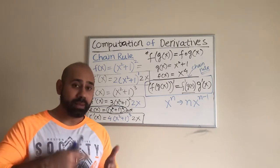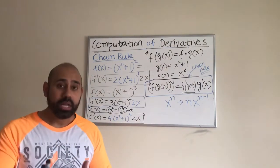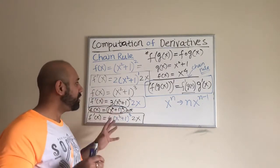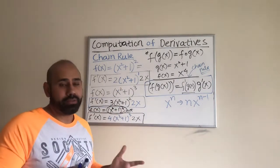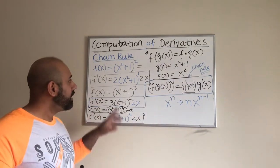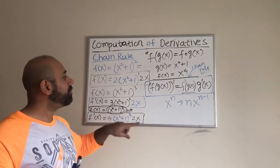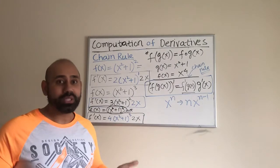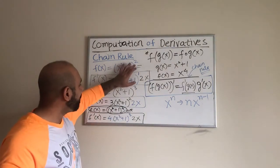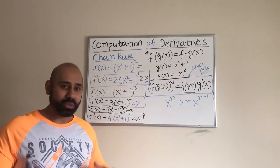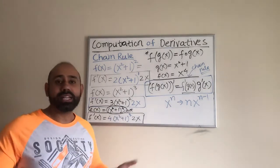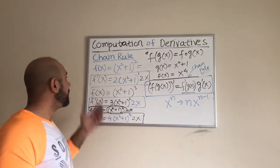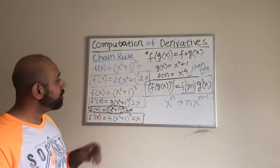Right now, all I want you to understand is: when you have a composite function, treat it as x to the power n for algebraic functions, use the power rule, and then multiply by the derivative of the inner. For the derivative of the inner, with algebraic functions, we still use the power rule. Think about if you have a power of 100 — it makes no sense to use the product rule at that point. You have to rely on the chain rule.